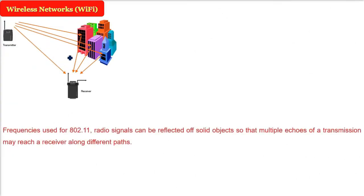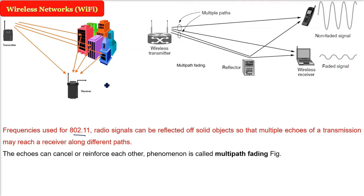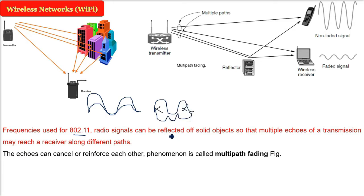When dealing with wireless networks, the frequencies used in 802.11 are radio signals. These can be reflected off solid objects like buildings, causing multiple echoes of transmission to reach a receiver along different paths. Two signals may reinforce each other, or they may arrive out of phase and cancel each other. This phenomenon of cancelling is called multipath fading, and it is very natural. If reinforcement occurs, you get a stronger signal; if cancellation occurs, you get a faded signal.